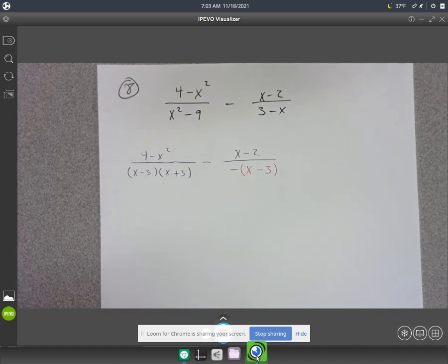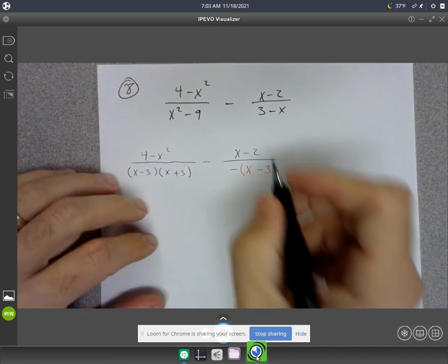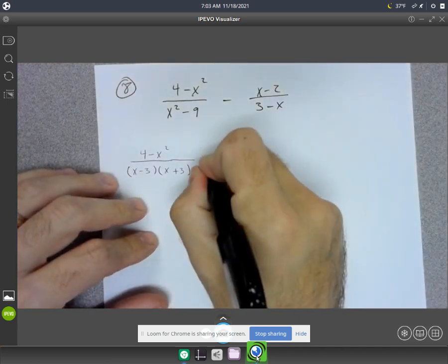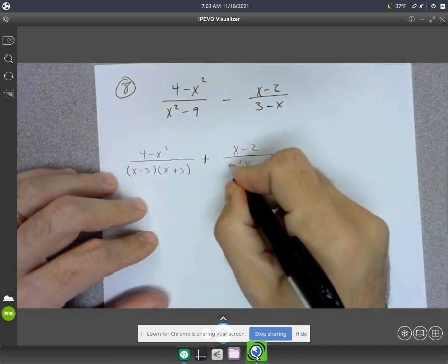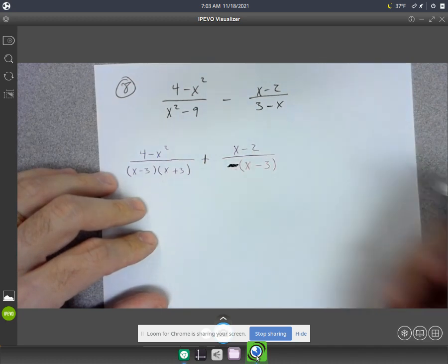All right, so don't miss out on this. This really helps your problem. Because you're subtracting a negative, that's just going to make this a big plus sign. And then I can get rid of the negative symbol right here.